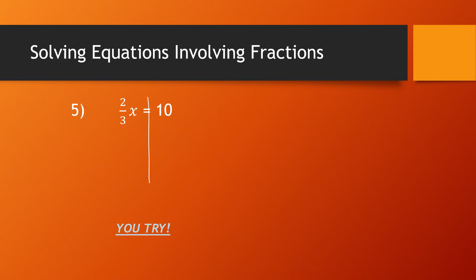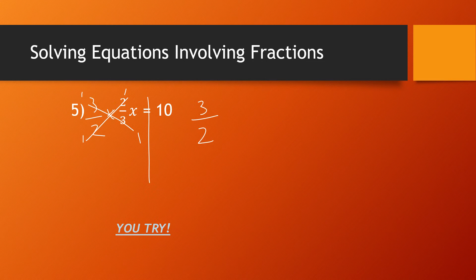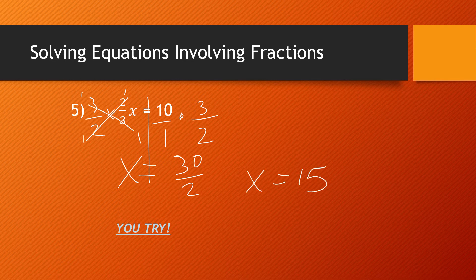Canceling out a fraction — remember we multiply by the reciprocal. To cancel out 2/3 I'm going to multiply by 3 over 2. Diagonally the 3s can cancel and the 2s can cancel, and that is gone. On the right-hand side I also put multiplied by 3 over 2. I change that 10 into 10 over 1. On the left-hand side I have x, and equals — when you multiply fractions you go straight across — so I have 30 over 2, which means x equals 15, because 30 divided by 2 is 15.